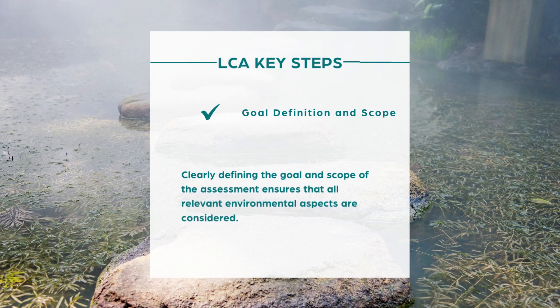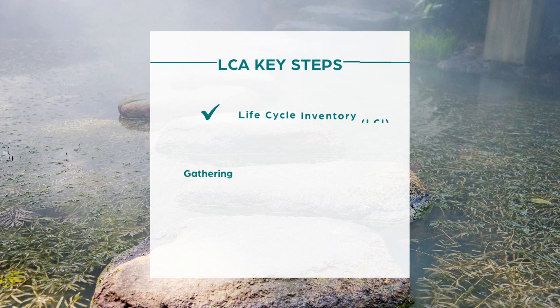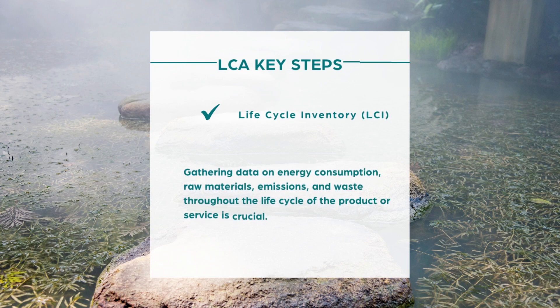Conducting an LCA involves several key steps. The first step is goal definition and scope — clearly defining the goal and scope of the assessment ensures that all relevant environmental aspects are considered. The second step is life cycle inventory, which focuses on gathering data on energy consumption, raw materials, emissions, and waste throughout the life cycle of the product or service. Accurate data collection helps us build a reliable LCA.